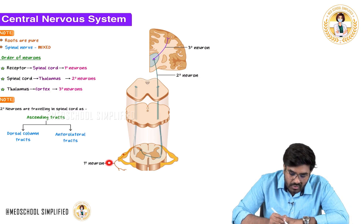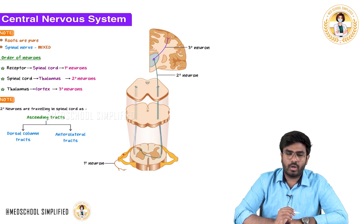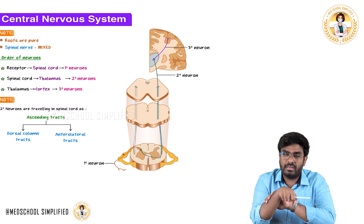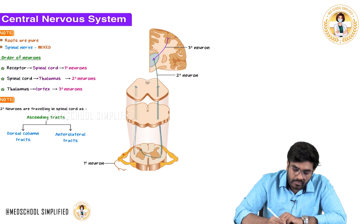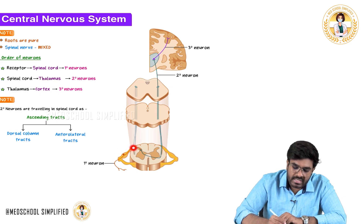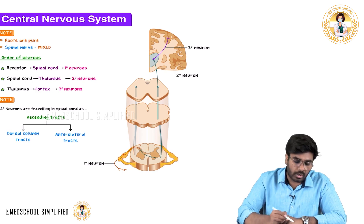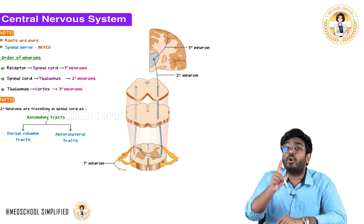Looking at the image: the first-order neuron is a pseudo-unipolar neuron. It starts from the receptor level. When the first-order neuron is stimulated, the cell body is present in the dorsal root ganglion. All sensations come to the dorsal horn, so the first-order neuron ends in the dorsal horn of the spinal cord.